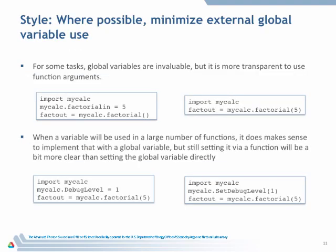A little bit about style. For some tasks you really do need global variables, but where they're not necessary, don't use them. Here are two different versions of a factorial routine. In one, I define the input as a global variable and then call the routine. In the other, I specify the input as an argument. The version with arguments is much easier to follow — with the global version, you might accidentally define the variable twice without realizing it. Using function arguments is much cleaner.